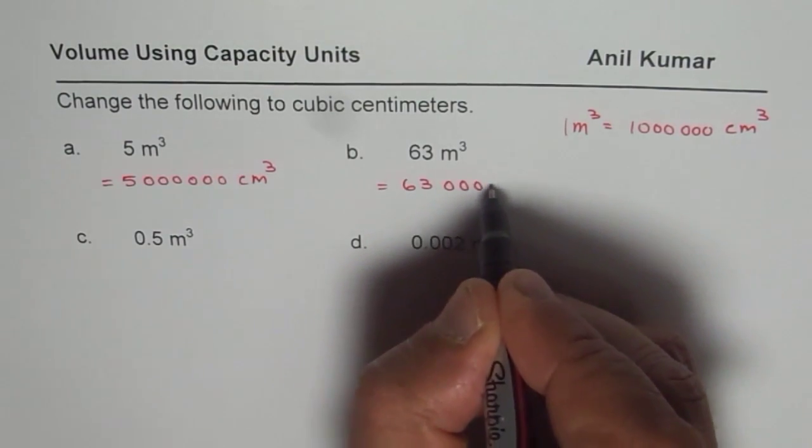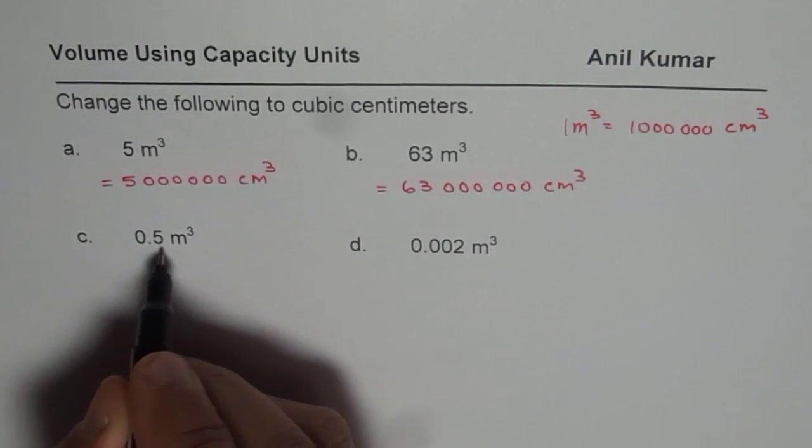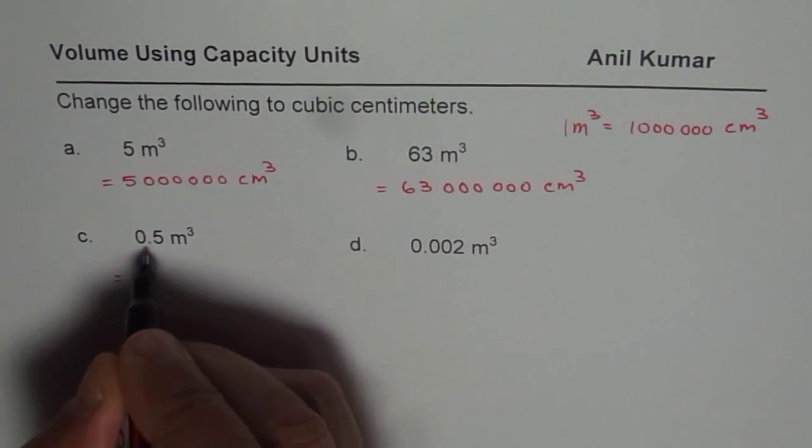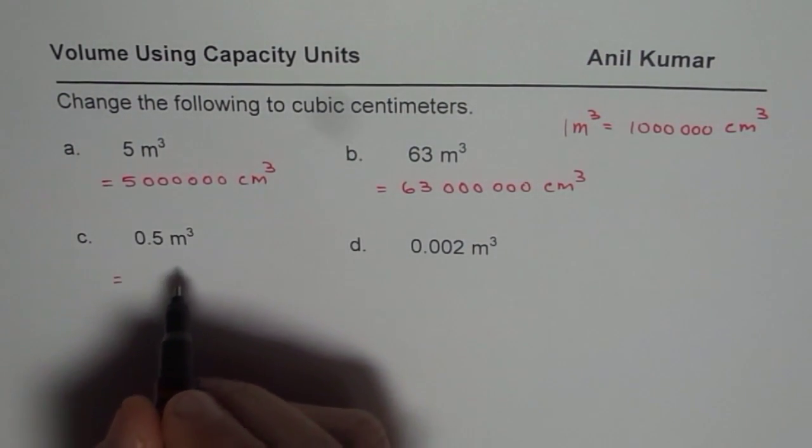0.5 will be 0.5 million or 50,000—0.5 million or 50,000,000?